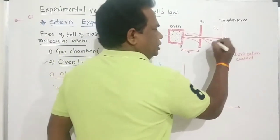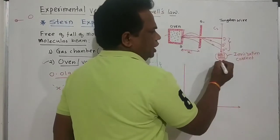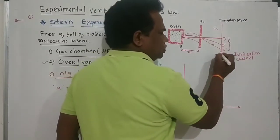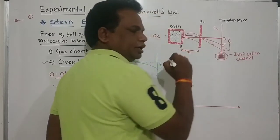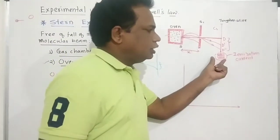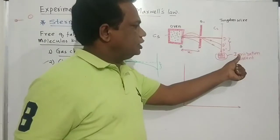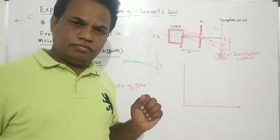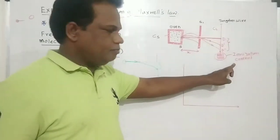When caesium atoms fall on the tungsten wire, they give an electron to the wire and are converted into positive ions. This positive ion is detected by the detector, which produces a current. That current is known as the ionization current.